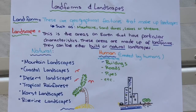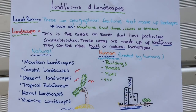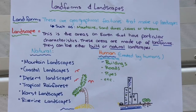Here are a couple of examples of natural landscapes. We've got things like mountain landscapes — within that you would have landforms such as hills, maybe even streams. You've also got coastal landscapes, deserts, tropical rainforests, karst landscapes, and riverine landscapes.